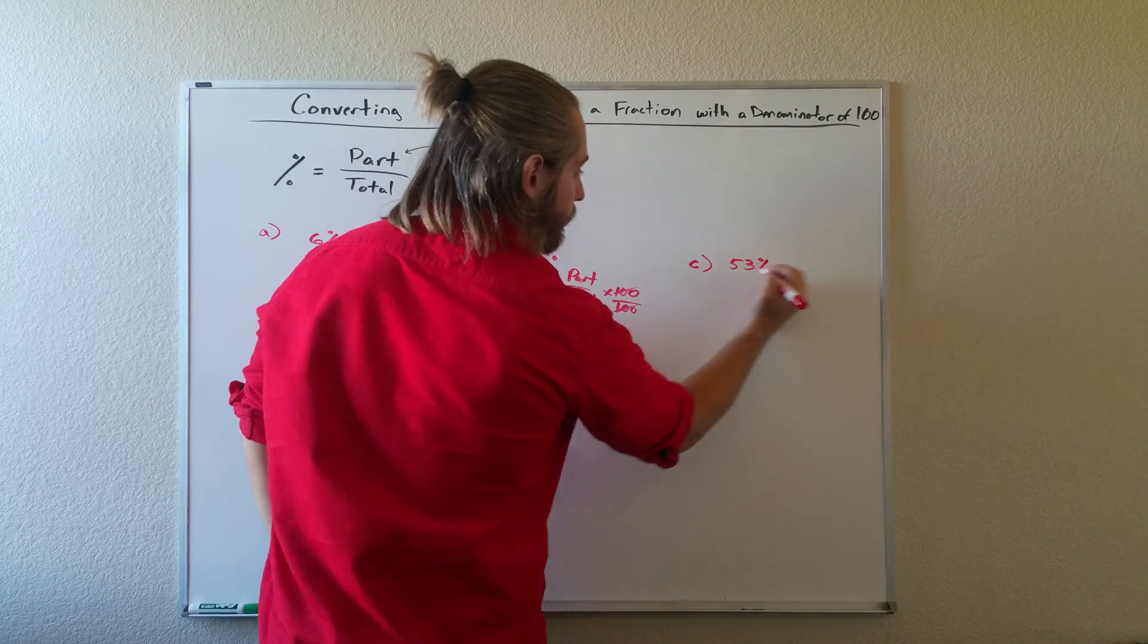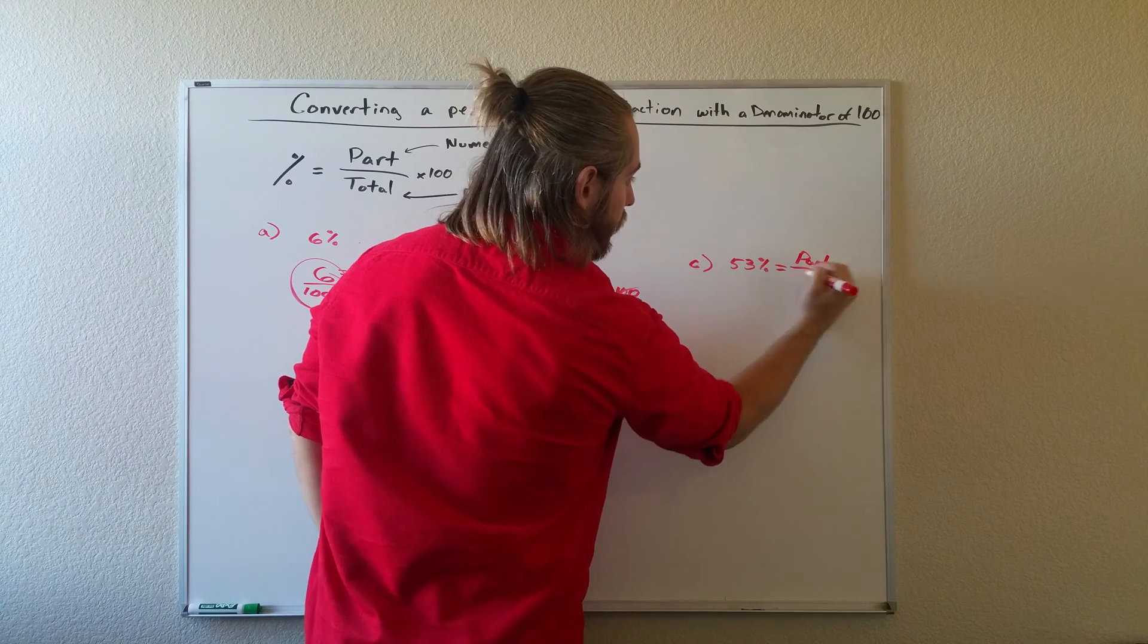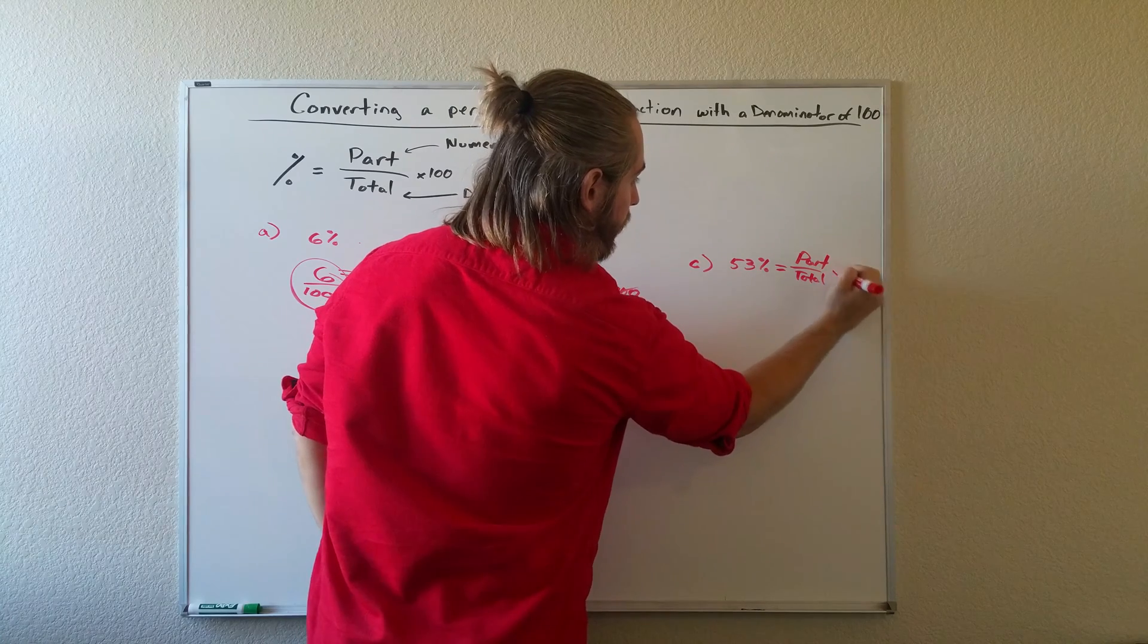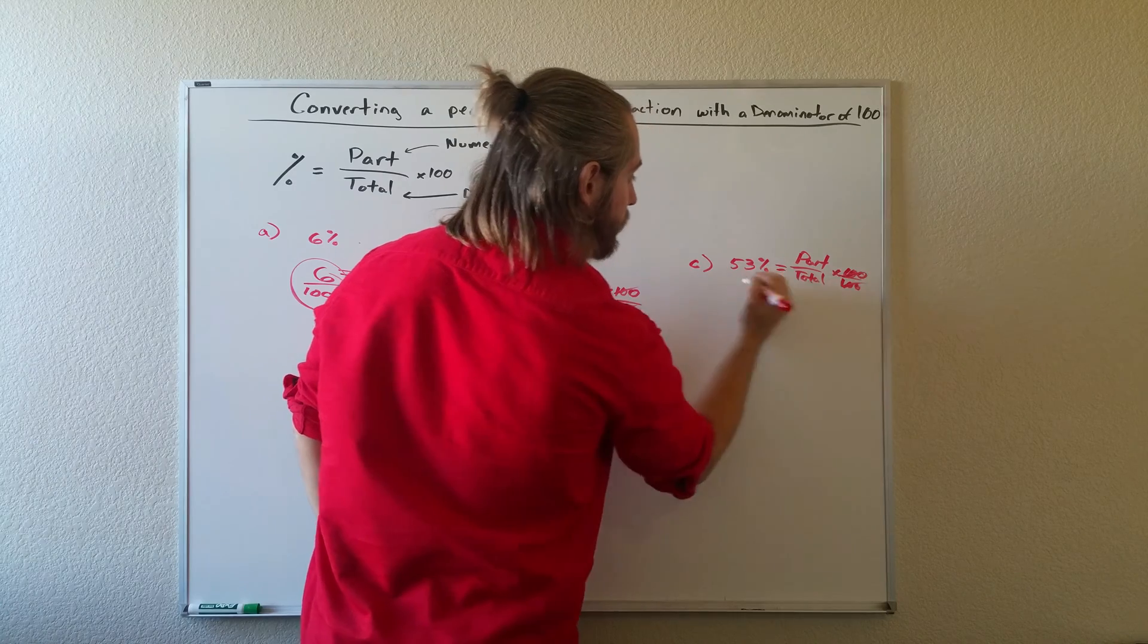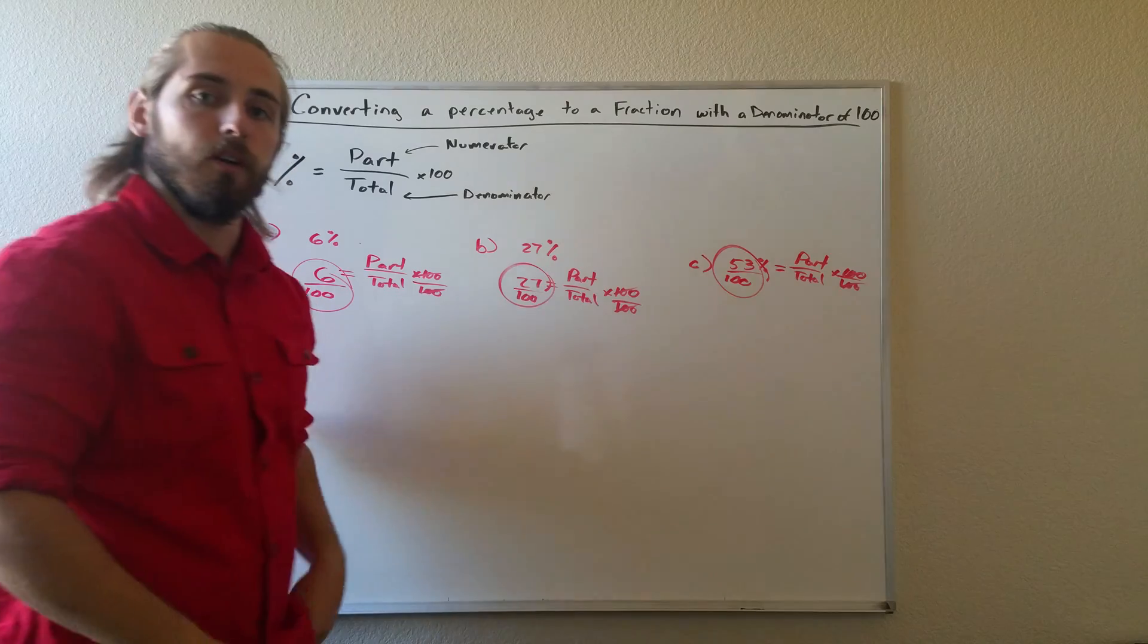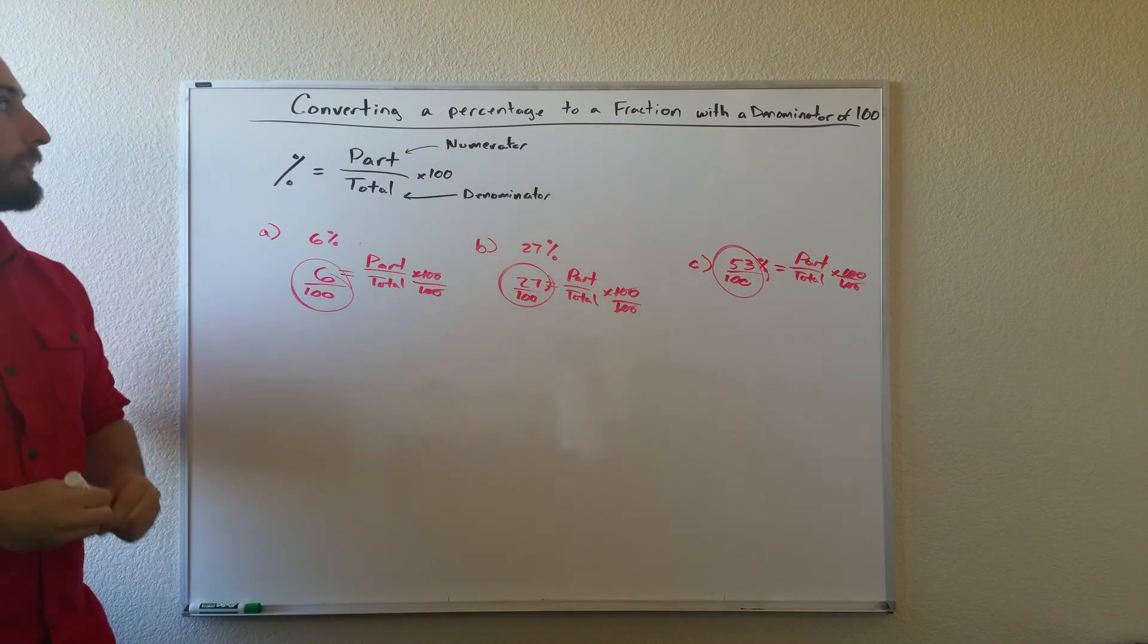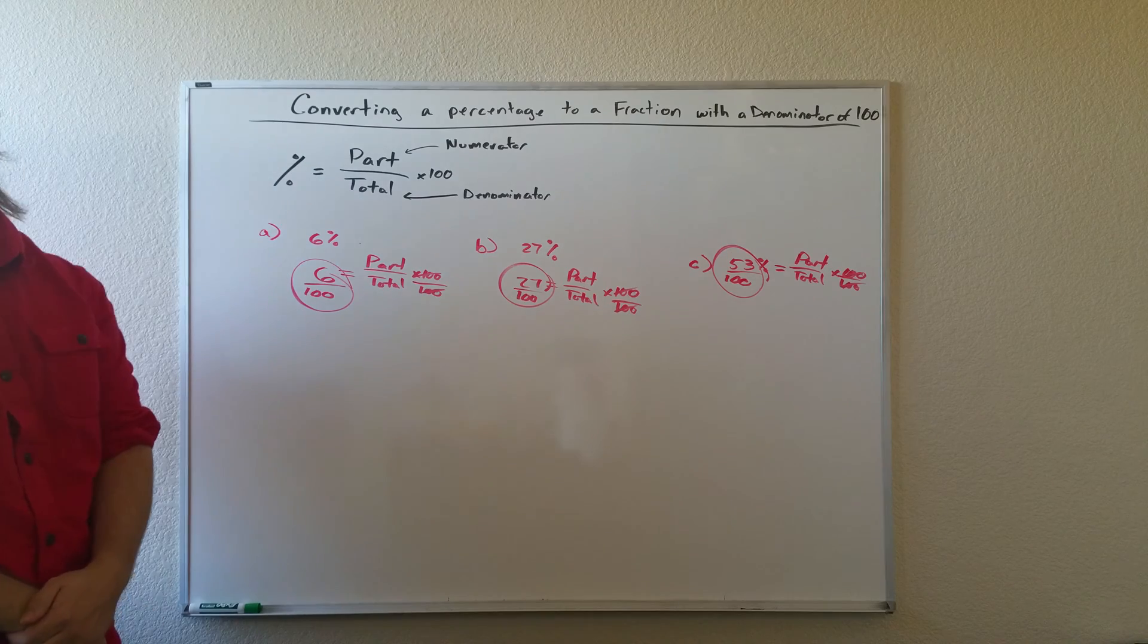Finally, we have 53 percent. We'll set that equal to part over total times 100, divide by 100 on both sides, and there's our final answer again: 53 over 100. And that's all there is for converting a percentage to a fraction with a denominator of 100.